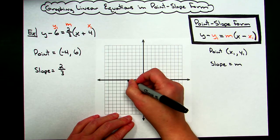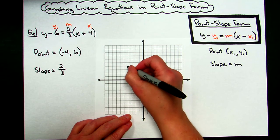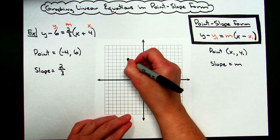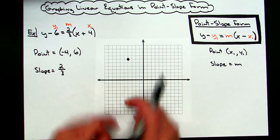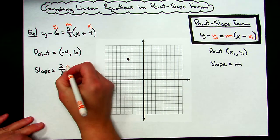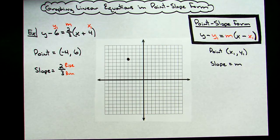1, 2, 3, 4 is negative 4 going to the left, and then up 6: 1, 2, 3, 4, 5, 6. So that is a point on the line. Now, from here, I'm going to use my slope, and I'm going to run my rise over run, because my slope is a fraction there.